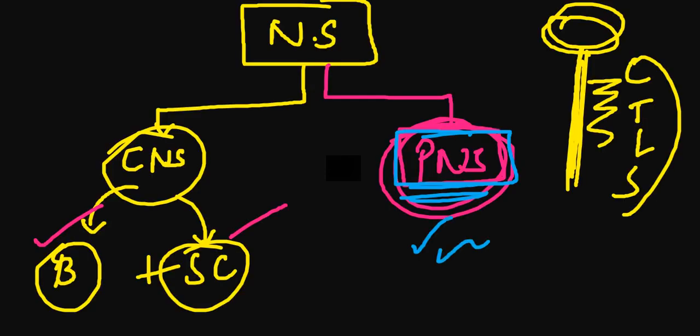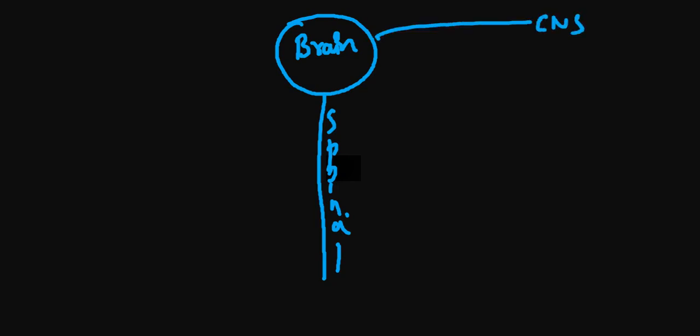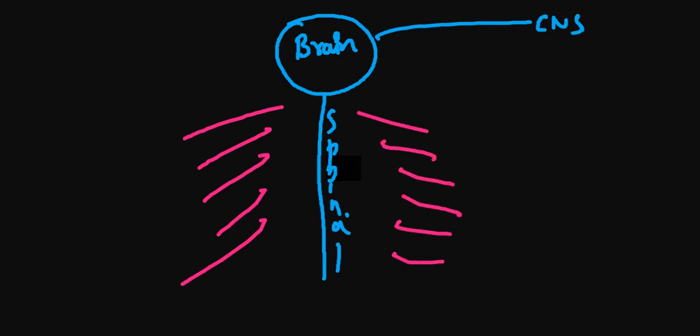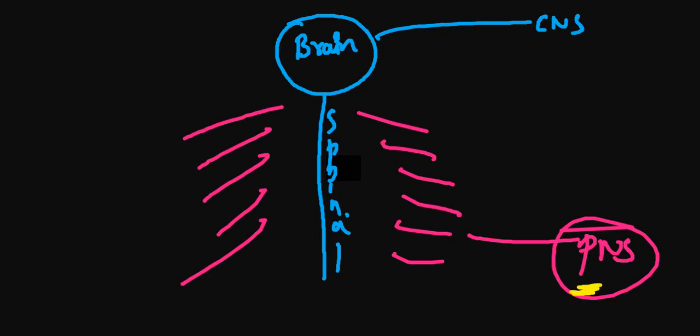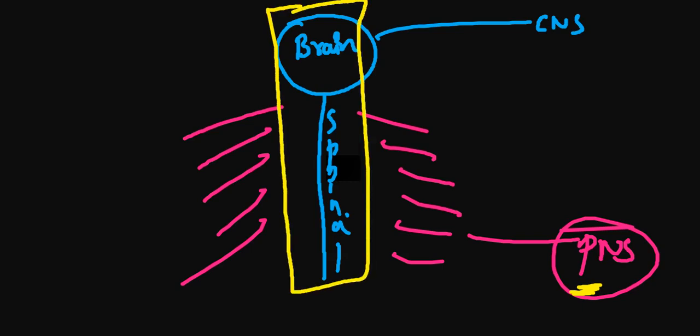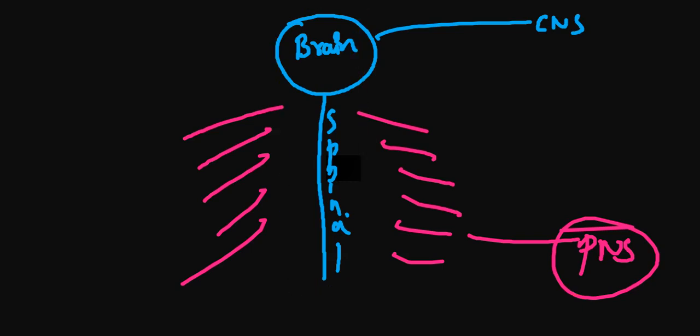Let's draw this: here is your brain and here is your spinal cord — that blue area is your CNS. The rest of your body is PNS — peripheral nervous system. The word 'periphery' is used because it is in the periphery; the CNS is your central portion, and your hands and everything else are in the periphery.